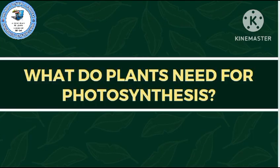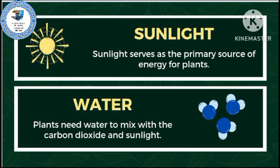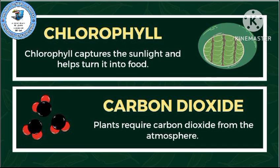What do plants need for photosynthesis? Sunlight serves as the primary source of energy for plants. Water — plants need water to mix with the carbon dioxide and sunlight. Chlorophyll captures the sunlight and helps turn it into food. Carbon dioxide — plants require carbon dioxide from the atmosphere.